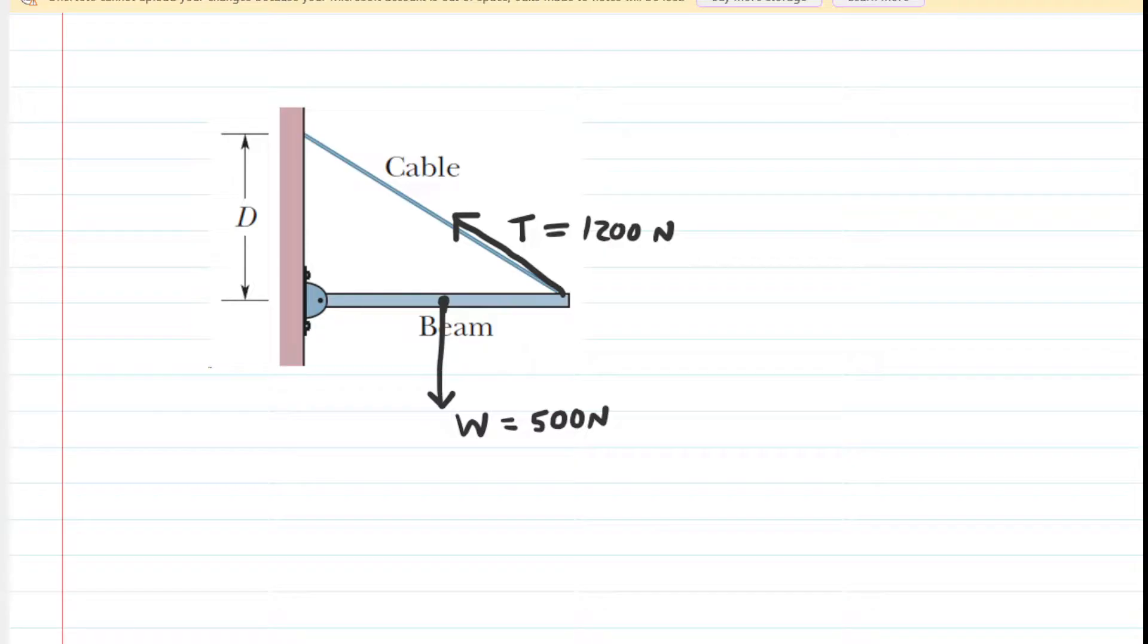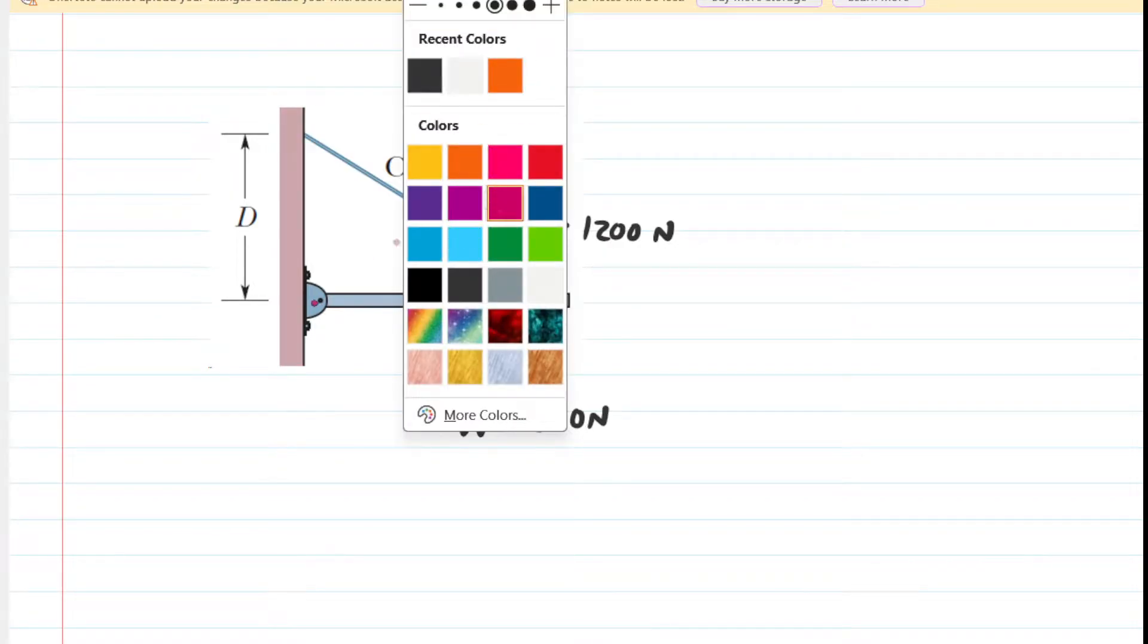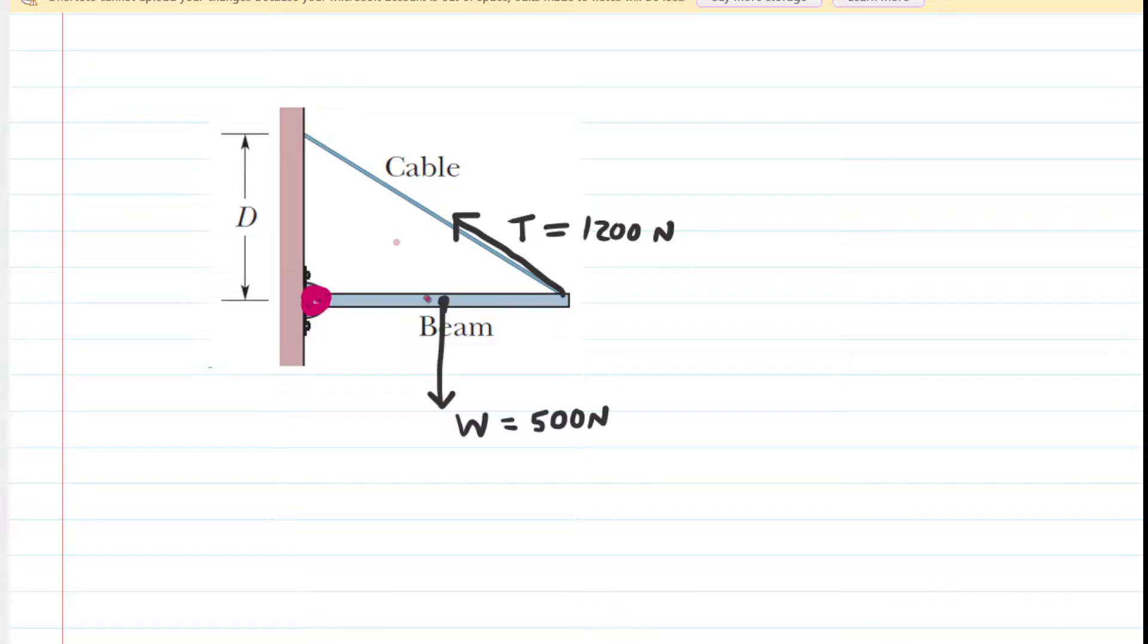Now perhaps in this question, the most obvious pivot point would be right here, because if the cable snapped, then the beam would rotate about that pivot. And if that's the pivot point right there, any forces that are acting on the beam at that pivot are not going to produce any torque.